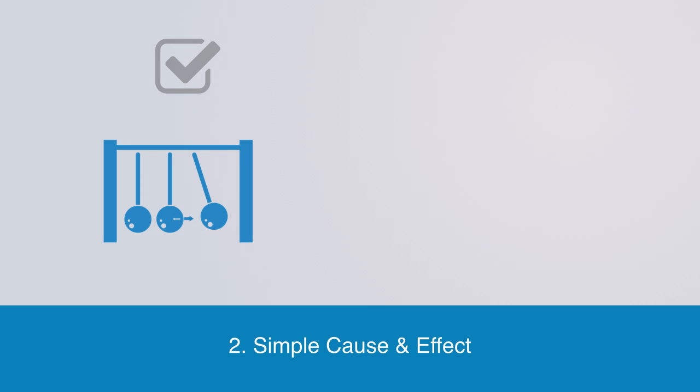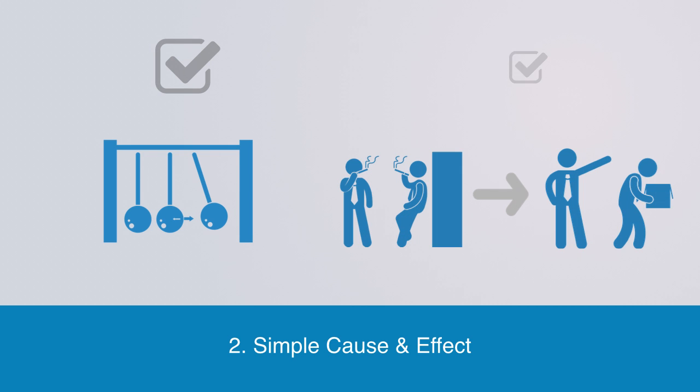Secondly, as we have noted, linear systems do capture the behaviour of some if not many systems, such as the simple interactions between particles and matter, or simple dynamics of cause and effect that we might sometimes see in social and economic behaviour.